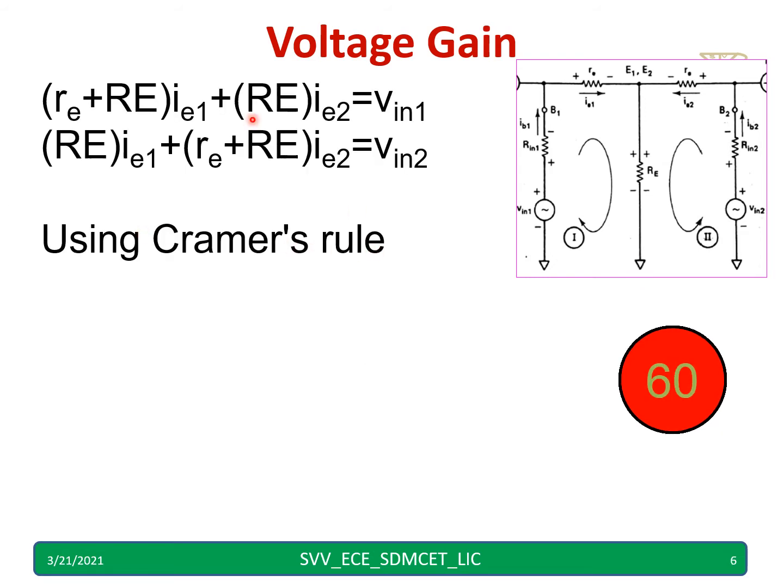Using Cramer's rule, these two can be solved for IE1 equal to and IE2 equal to. So IE1 equal to, we will get RE plus RE into VIN1 minus RE into VIN2 divided by RE plus RE square minus RE square. This already derived in a dual input balanced output configuration. Now let us go to the next.